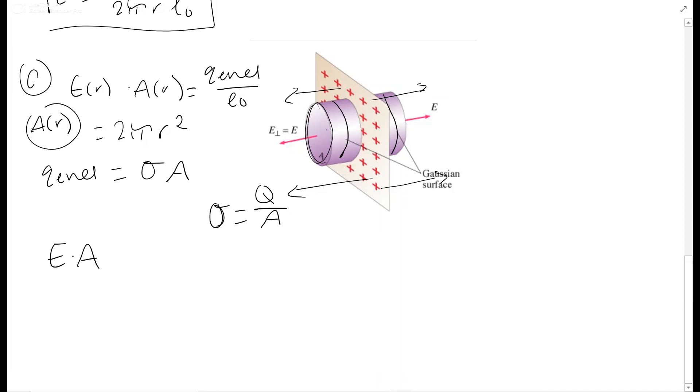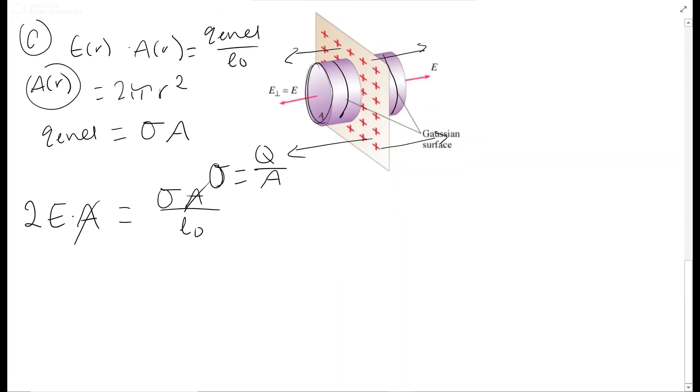So we're going to have our E times A, your area. This one we have 2. There's 2 ends, from the left and the right. So 1 multiplied by 2. And we get Q enclosed which is omega A over epsilon naught. So the A's actually cancel out. This whole part doesn't even matter. But then you get E equals omega over 2 epsilon naught. And that is your answer for C.